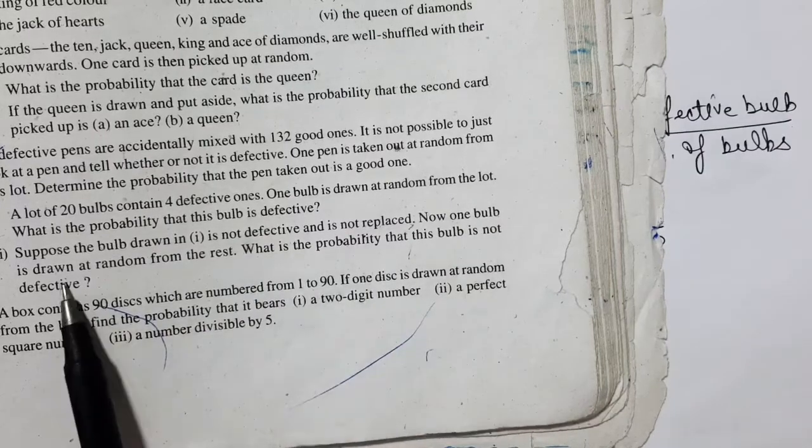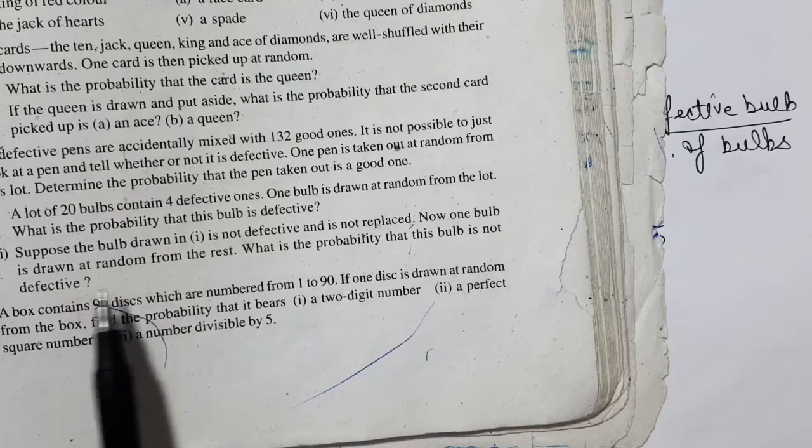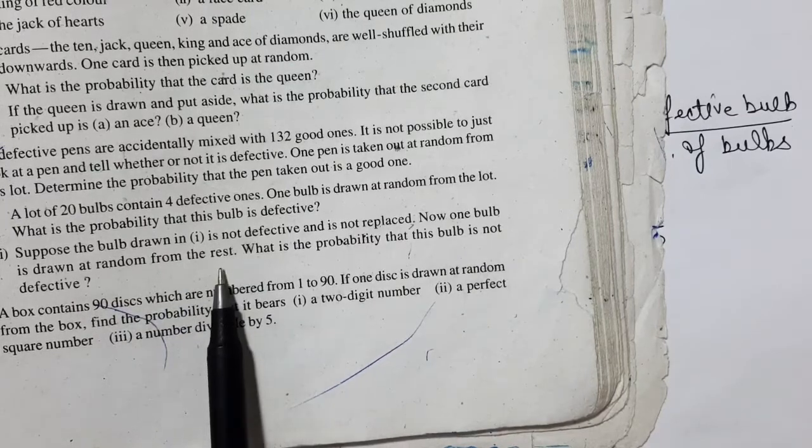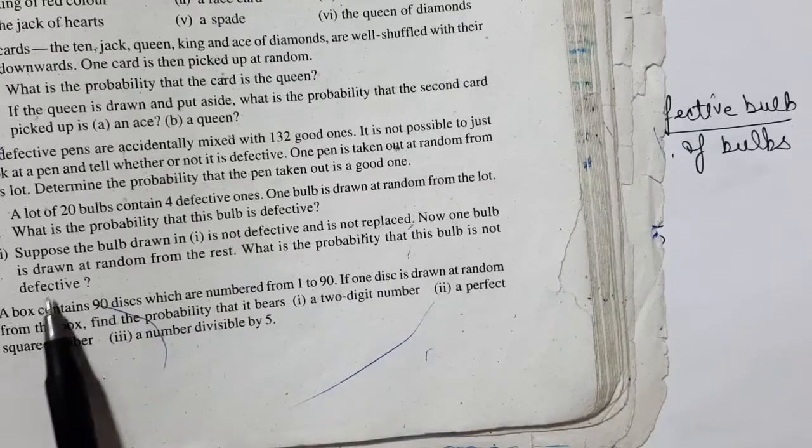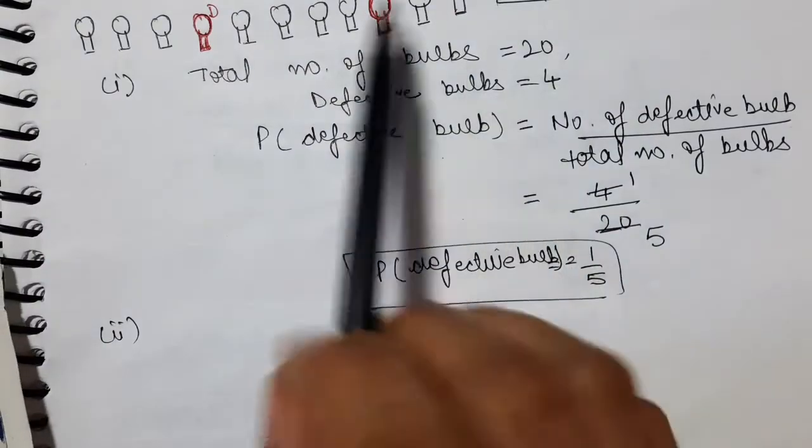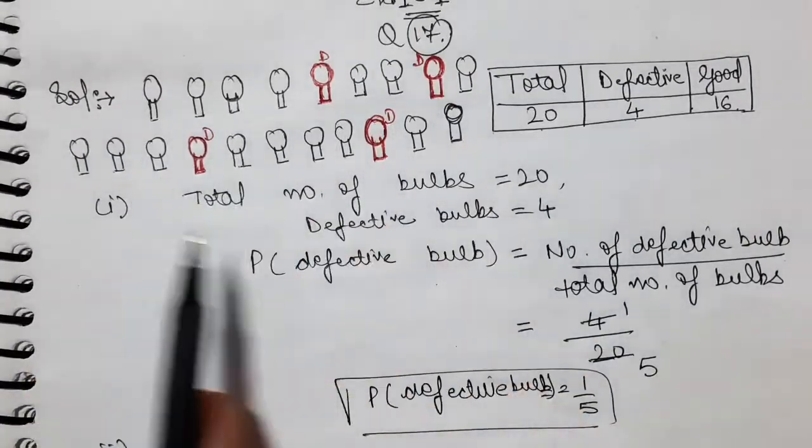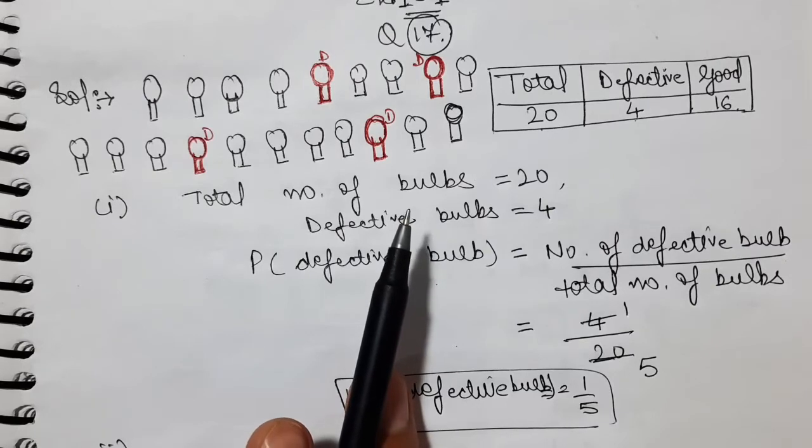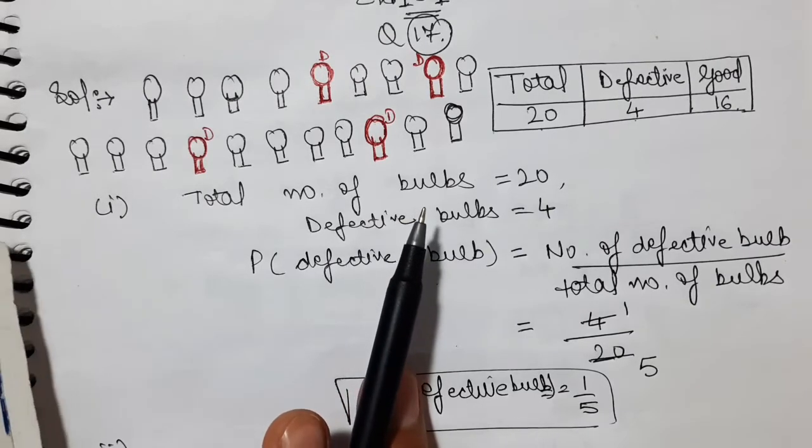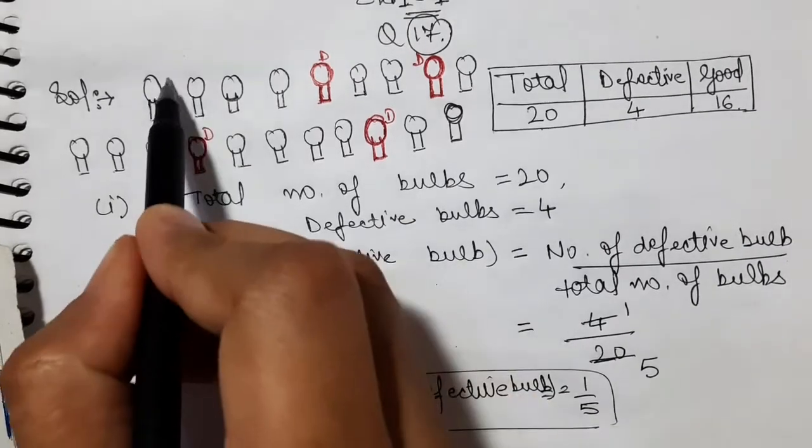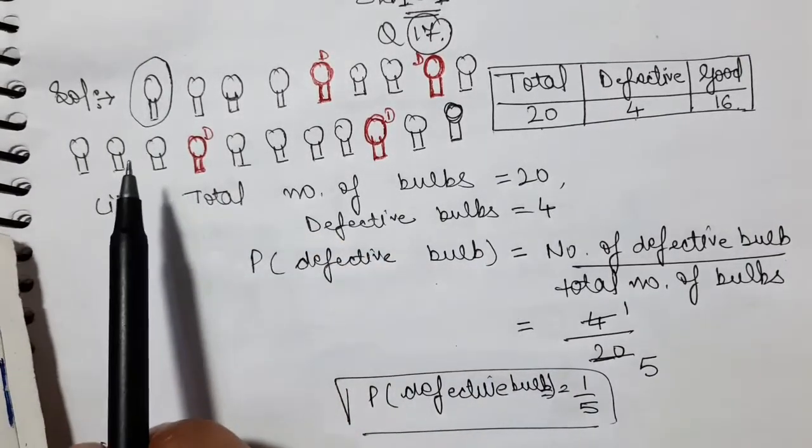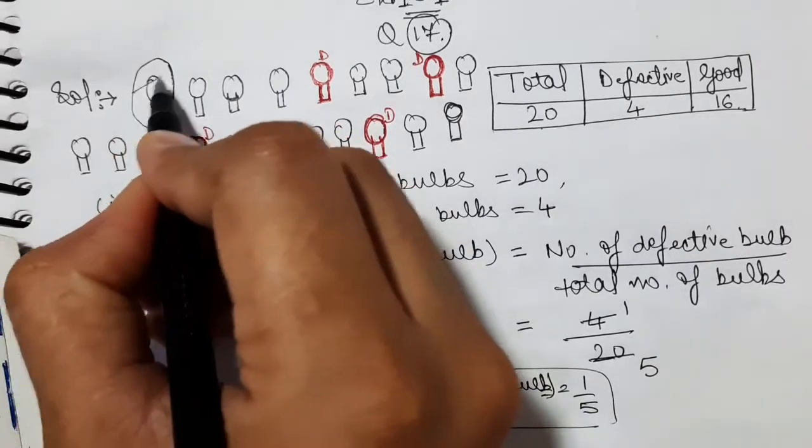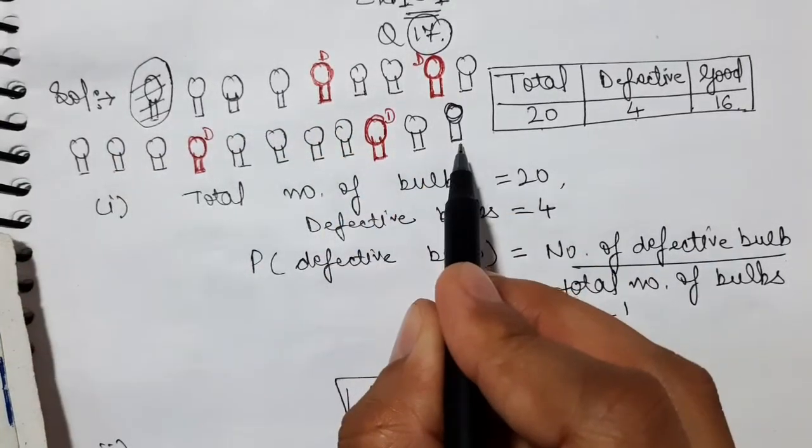Now one bulb is drawn at random from the rest. What is the probability that this bulb is not defective? There are chances of good to come. So here we have all the bulbs, we have 20 bulbs. The bulb we have drawn from this is not defective, means good. This bulb we have drawn from the first part. So now we will not replace it, so we have removed it. So now how many bulbs will be left in the shop?